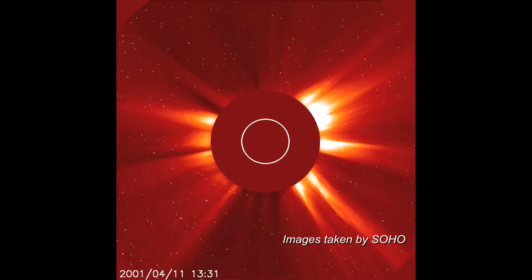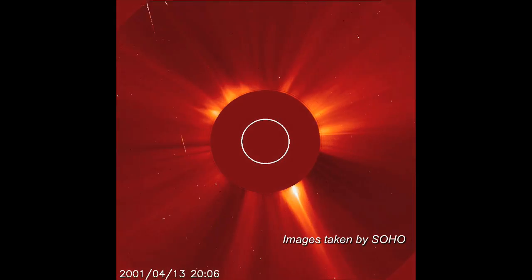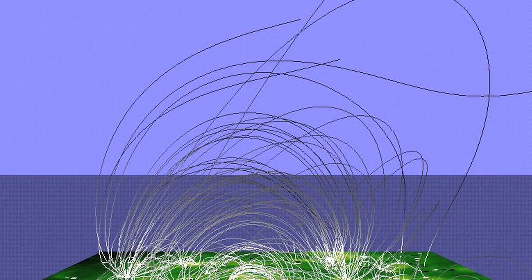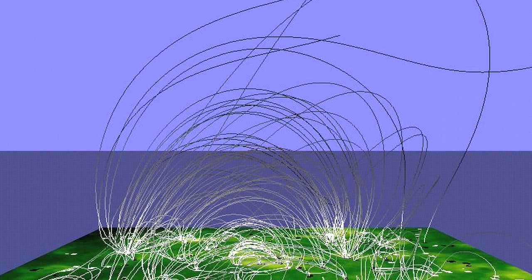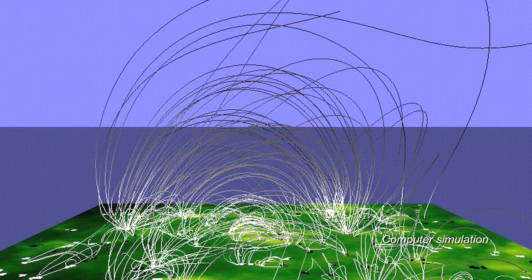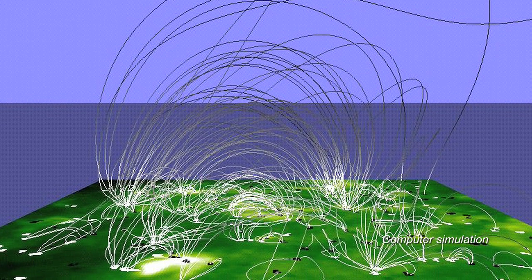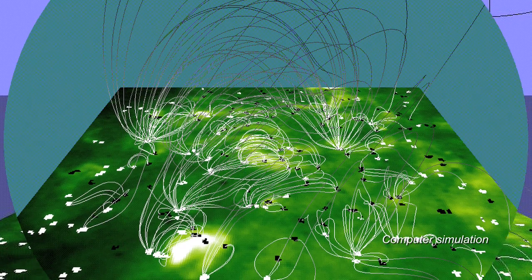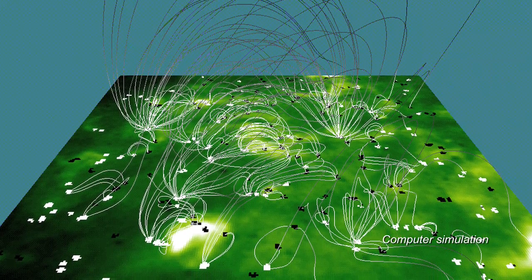Using data from SOHO, scientists have analyzed the appearances and disappearances of tens of thousands of small magnetic concentrations on the solar surface. This magnetic carpet is highly dynamic and rapidly changing. Energy flows from the magnetic loops when they interact, producing electrical and magnetic short circuits.